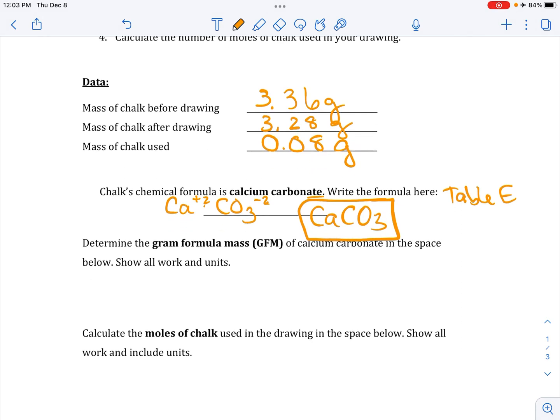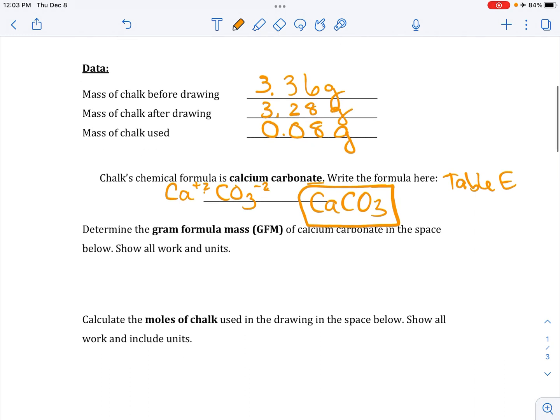Determine the gram formula mass of calcium carbonate in the space below. Show all work and units. OK, so I'm not going to actually solve this for you, but I'm going to guide you to it. So my formula is CaCO3. So I'm going to go to periodic table, and I'm going to find the masses. When we round them to whole numbers, we're going to call them gram formula mass. And we're going to add them all up.